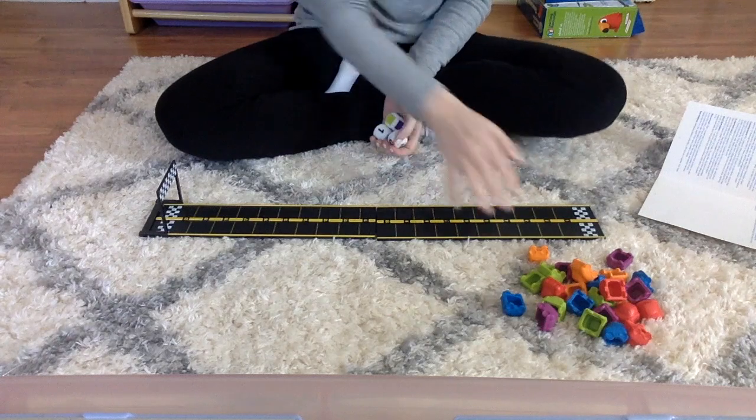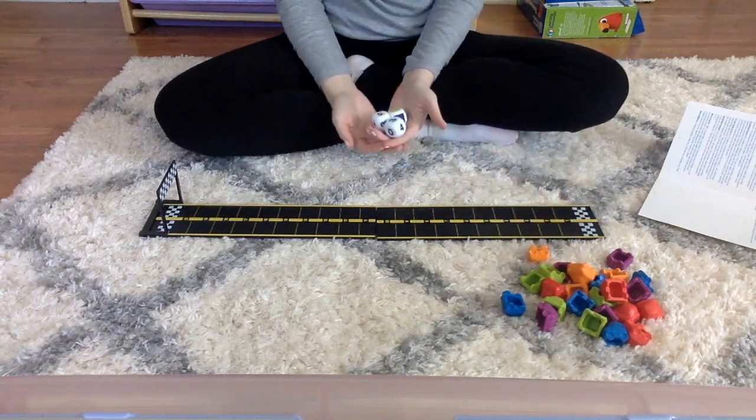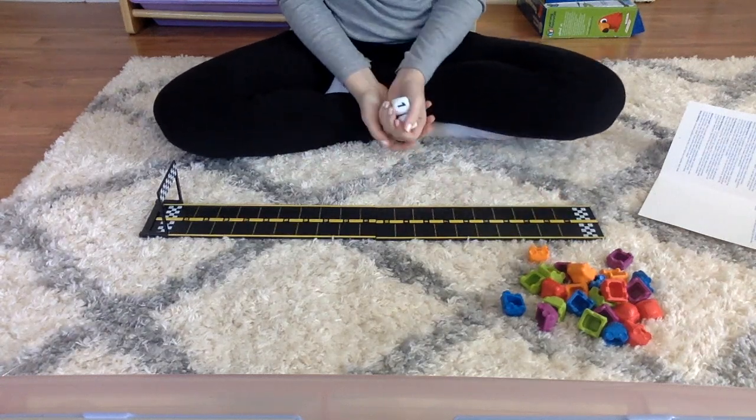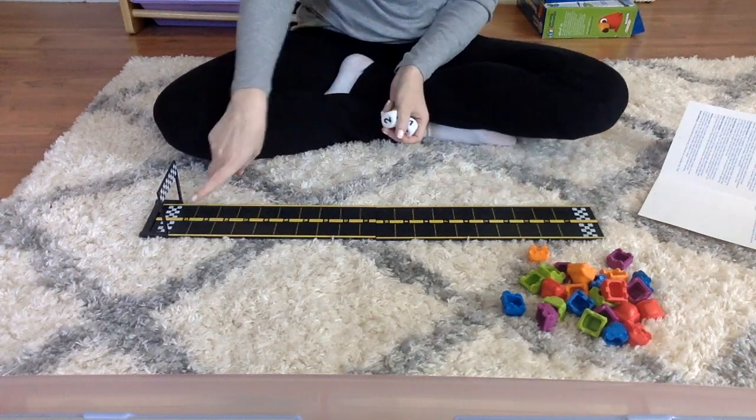This is the roadway and it comes with colored cars and dice. There are a number of activities you can do while children practice counting from 1 to 20.